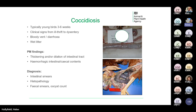At post-mortem there is thickening and dilation of the intestinal tract and haemorrhagic intestinal or caecal contents. The specific section of the intestine affected depends on which coccidial species is present, as they affect different levels of the gut. Even though the pathology might suggest a diagnosis of coccidiosis, the gross lesions are not diagnostic, so you need to do intestinal smears or take sections of gut for histopathology. In live birds you can do faecal smears or faecal oocyst counts.